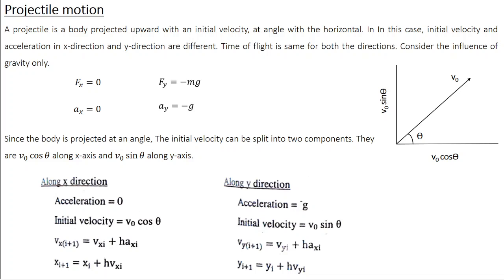Similarly, along the y-direction, acceleration Ay equals minus g and initial velocity is V0 sin theta. Then Vy(i+1) equals Vy(i) plus h into Ay(i), and y(i+1) equals y(i) plus h into Vy(i). This is very similar to the two-dimensional motion — the only difference is that your initial velocity has two separate components.